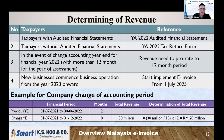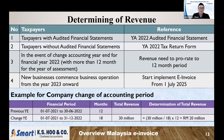How do you determine your sales turnover to identify your e-invoice phase? If your company has an auditor report — normally Sdn Bhd companies — refer to your 2022 audited financial statement sales amount to determine whether you fall under phase one, two, or three. For those without an auditor report — sole proprietors, partnerships, and associations — refer to your income tax submitted form and use the revenue reported in your 2022 tax form.